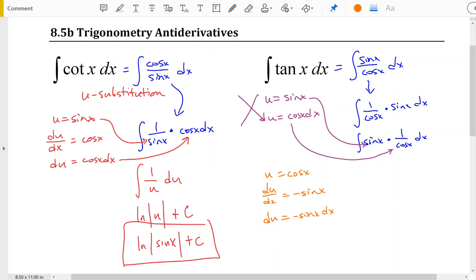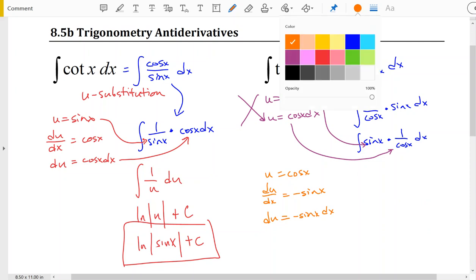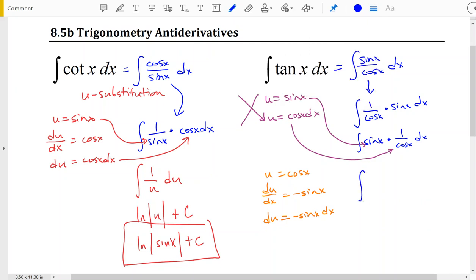Now again, as we saw previously, this function can be rewritten as 1 over cosine of x times sine x dx. The u can go in for cosine of x. And we see here sine x dx.